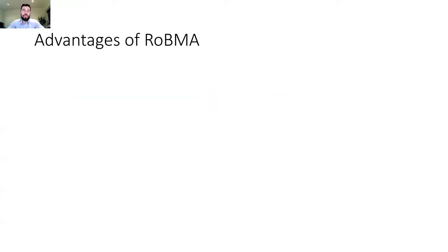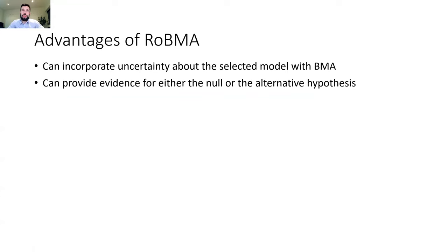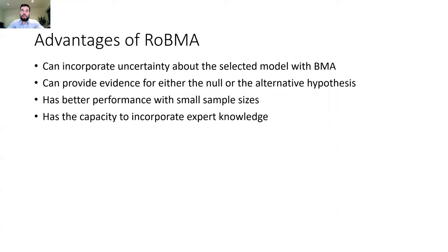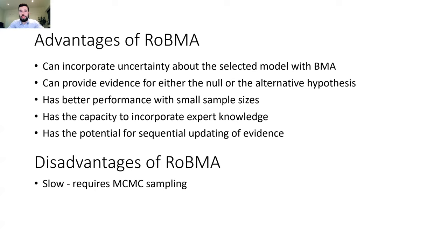To summarize the RoBMA approach: it can incorporate uncertainty about the selected model with Bayesian model averaging, so you don't have to base inference on any single publication bias adjustment model. It can provide evidence for either the null or alternative hypothesis, has better performance with small sample sizes, has the capacity to incorporate expert knowledge, and has the potential for sequential updating. On the other side, there are disadvantages: it's slow, it requires MCMC sampling, and it can fail under strong p-hacking.